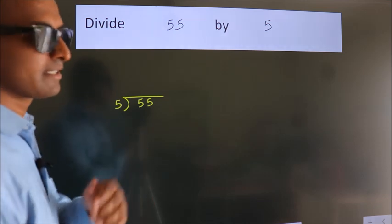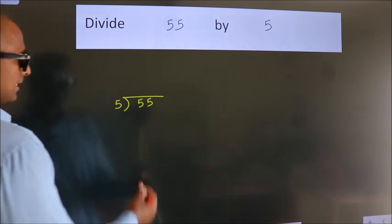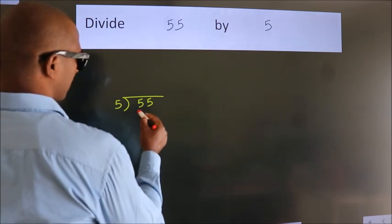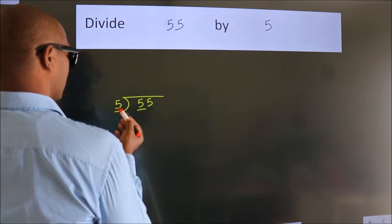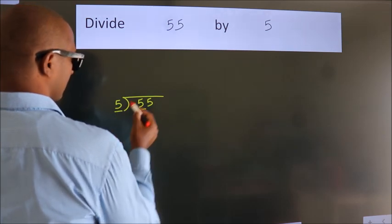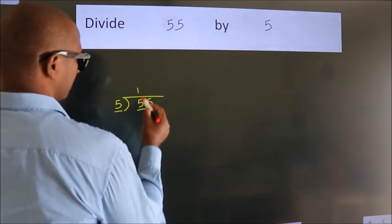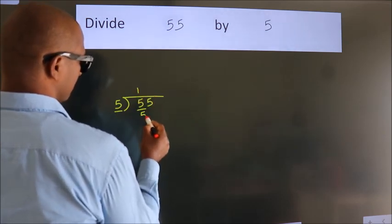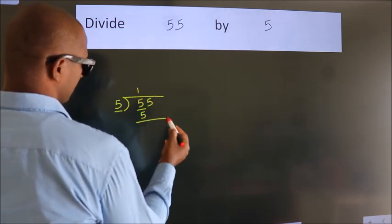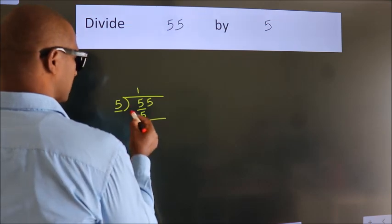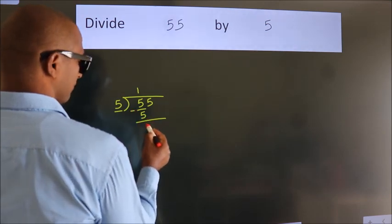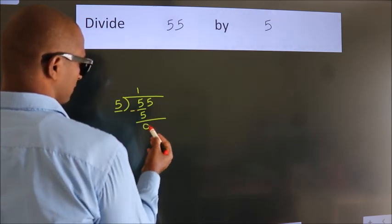Next, here we have 5, and here 5. When do we get 5? In the 5 table — 5 once is 5. Now we should subtract. We get 0.